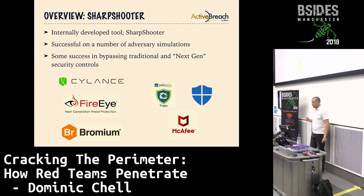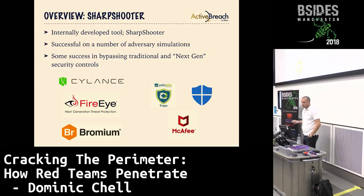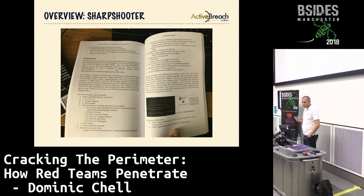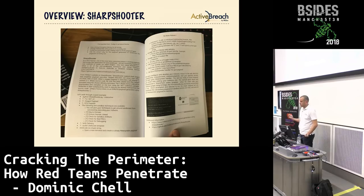I released a tool in March this year called Sharpshooter, and I've released several iterations of updates since then. We've been using this tool quite a lot on red team engagements with a lot of success. We've used it to bypass next-gen security controls like FireEye, Cylance, Bromium, Palo Alto Traps, as well as traditional AV like Windows Defender and McAfee. It also got featured in Hacker's Playbook 3, Red Team Edition.